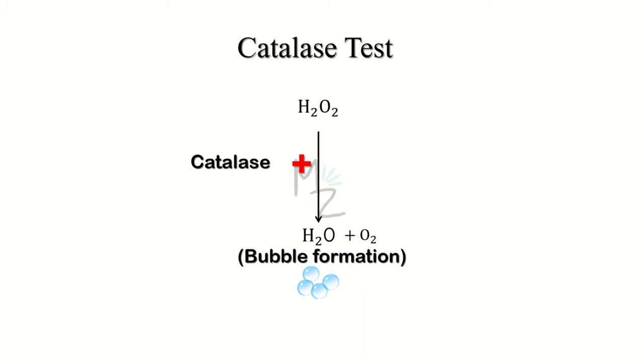Catalase test. It is a test of the catalase enzyme. If a bacteria has the enzyme, it will convert hydrogen peroxide into water and oxygen and oxygen is responsible for forming bubbles. In the case of strep gallolyticus, there's no catalase enzyme. So hydrogen peroxide will not be converted into water and oxygen and there will be no bubbles.